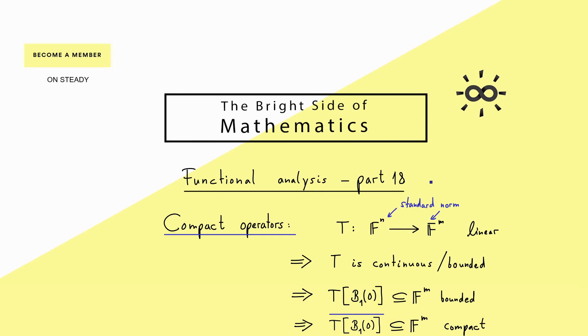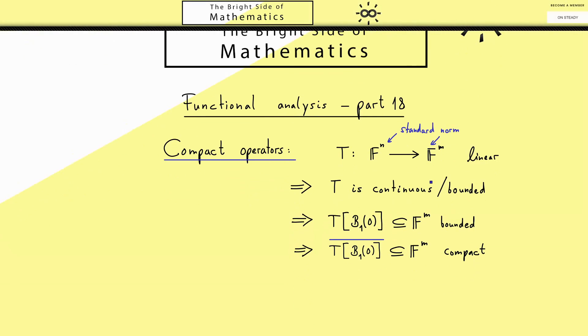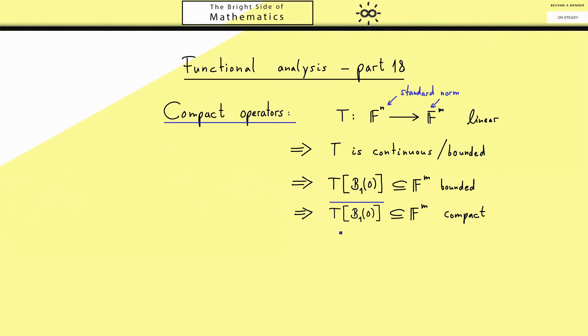With this, essentially you now know what a compact operator is. When we look at the image of the unit ball and form the closure and this set is compact, we speak of a compact operator. Of course this always holds in this case but not in general.